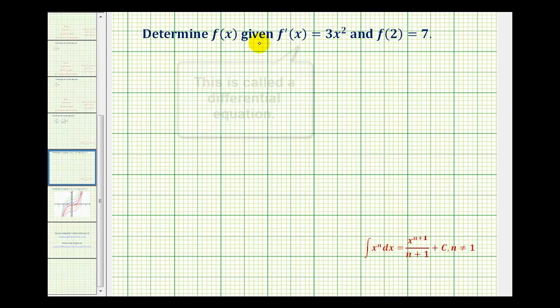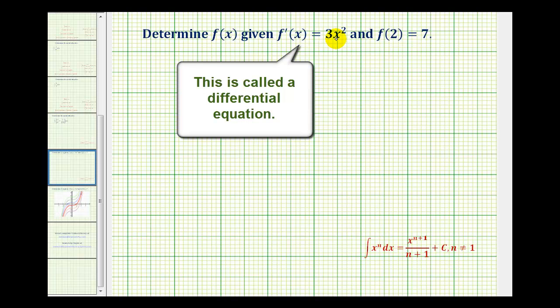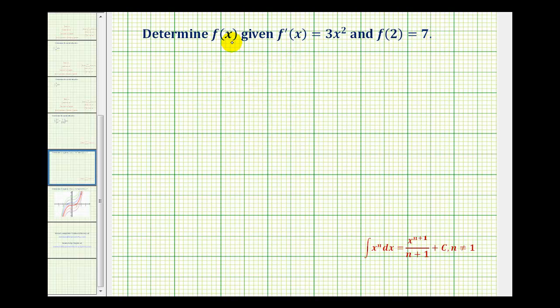We want to determine f(x) given that f'(x) equals 3x² and f(2) equals 7. So we want to determine a function that has a derivative of 3x² and f(2) equals 7.